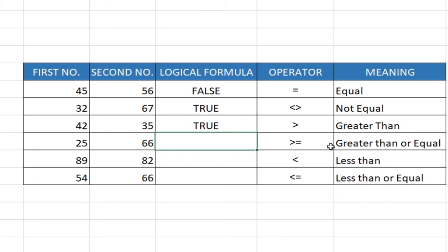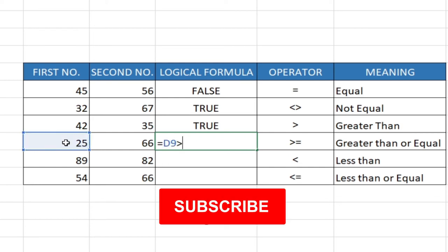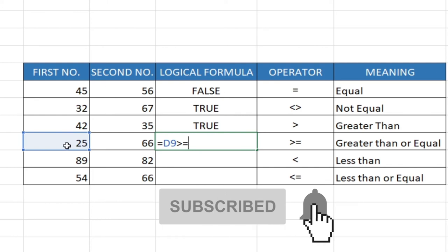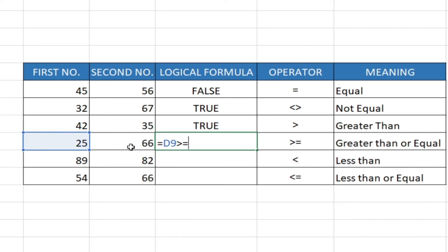Now let's try greater than or equal to. Bring equals sign, select the first number, then bring greater than or equal to. We want to see if this number is greater than or equal to the second one. Select the second cell and it's going to be false, meaning 25 is not greater than or equal to 66. So we are getting the output as false.